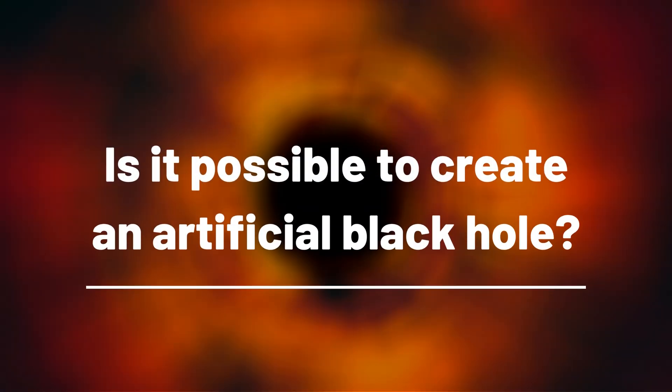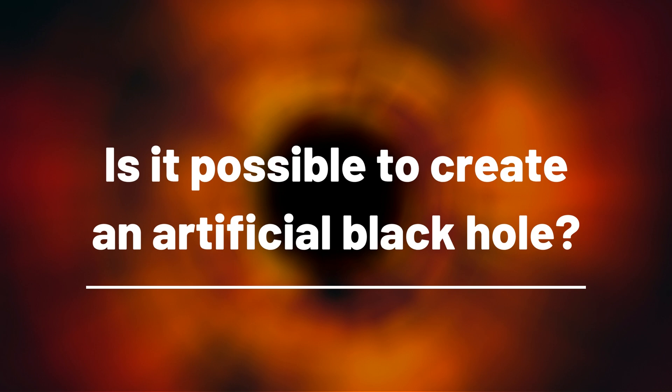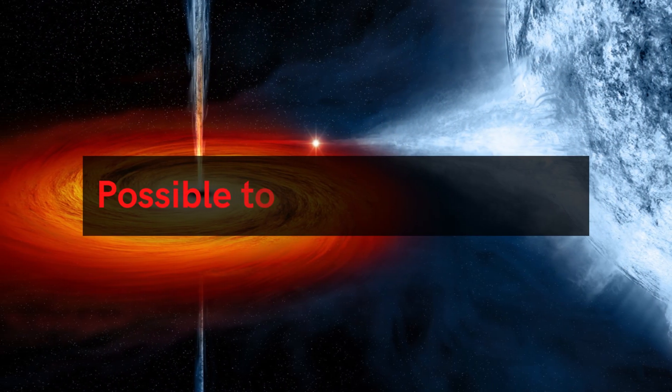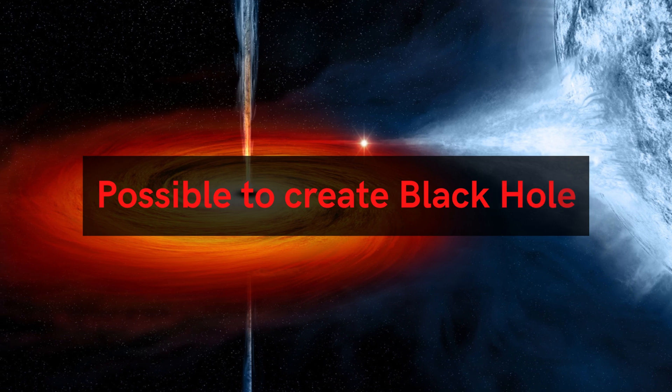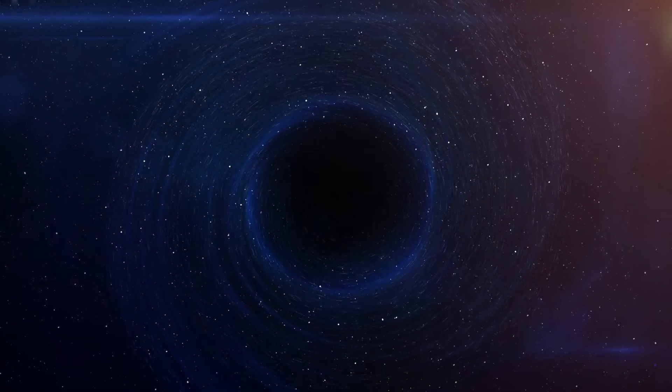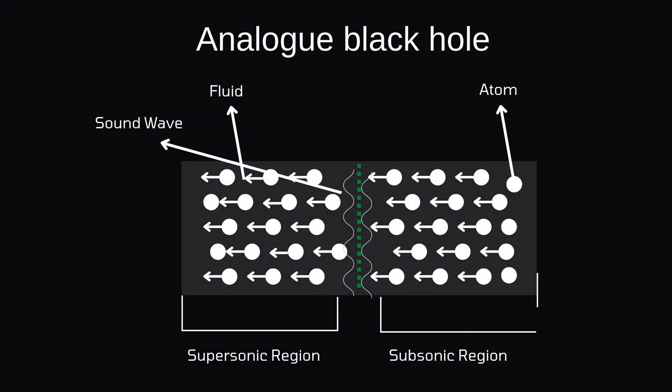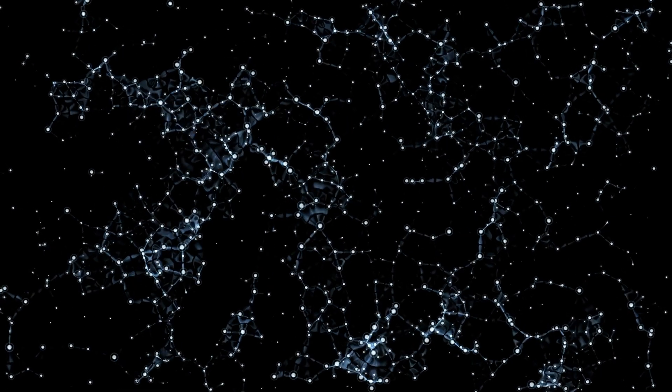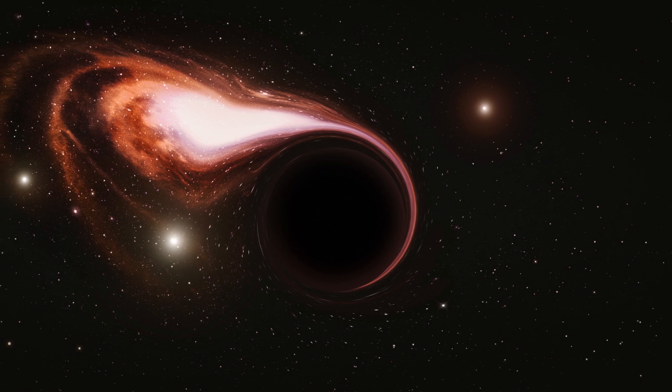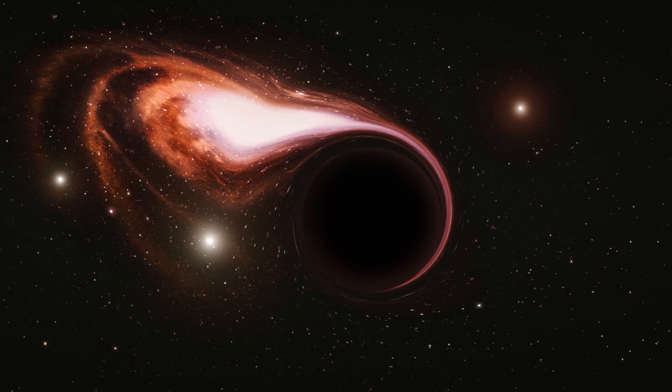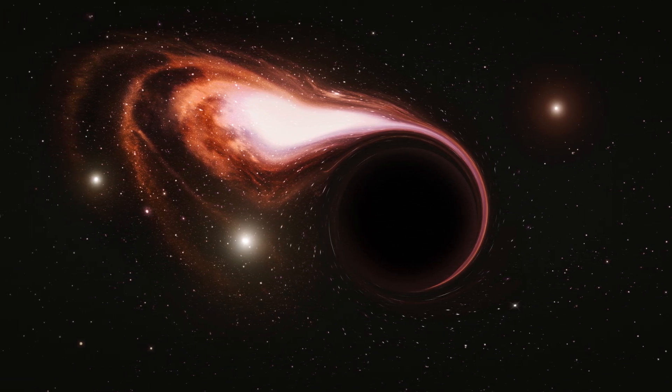Is it possible to create an artificial black hole? Yes, it is possible to create an artificial black hole. This was demonstrated by a physicist in Israel who created a lab-grown analogue black hole using some thousand atoms. This lab black hole exhibited all properties of a black hole and the state in which it is believed to exist in space.